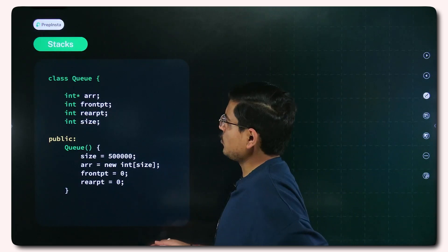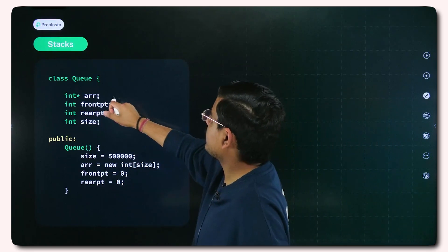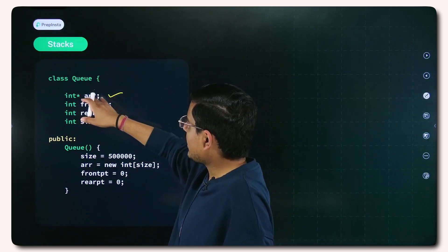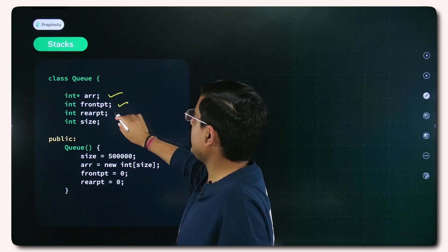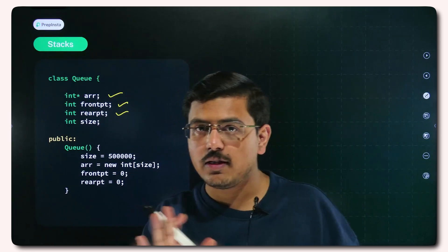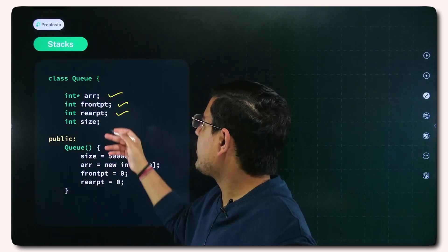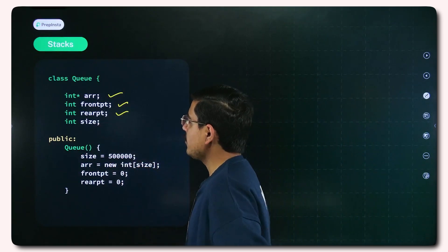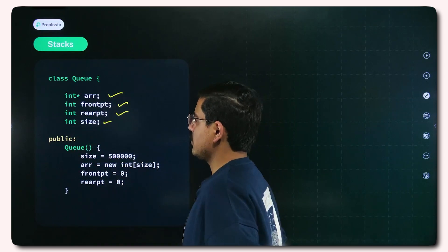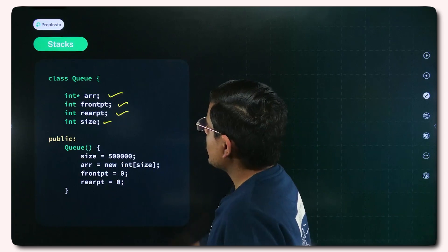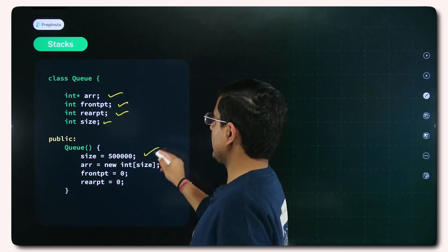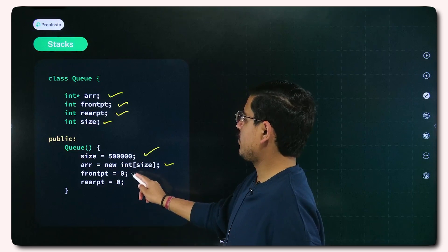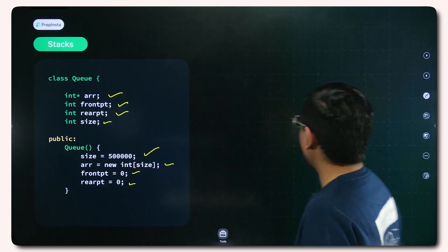We are implementing it using arrays. I declare a class queue in that I declare one array pointer, basically dynamic way of allocating memory to array. I declare a front pointer front PT, I declare a rear pointer rear PT. These are integer variables, not pointers. I am just saying pointers because I have written them front PT. Then another integer variable which is size and there I will be declaring the size of array. I create a constructor in which I declare the size, humongously large size, and I assign this size to the array. Then front PT and rear PT are set to 0.